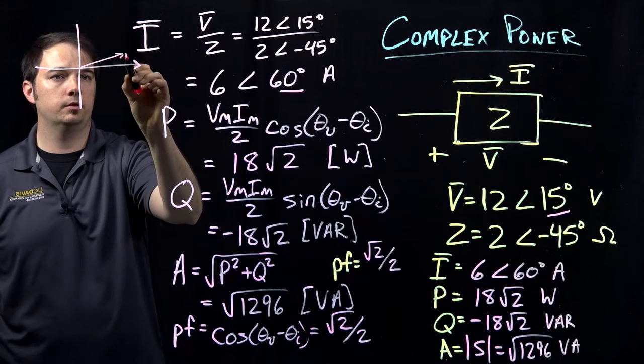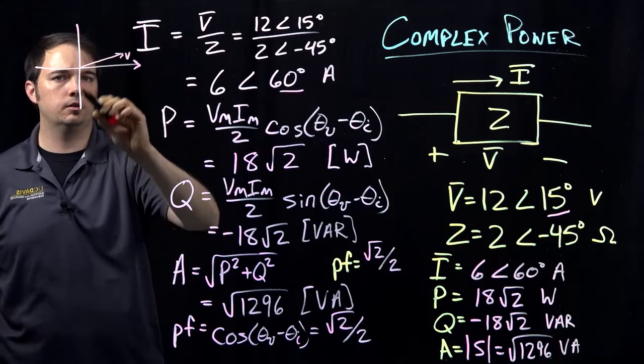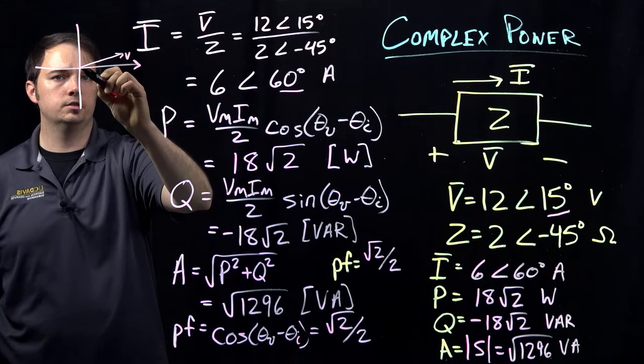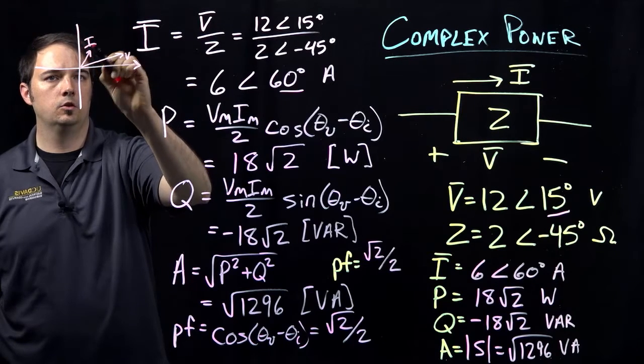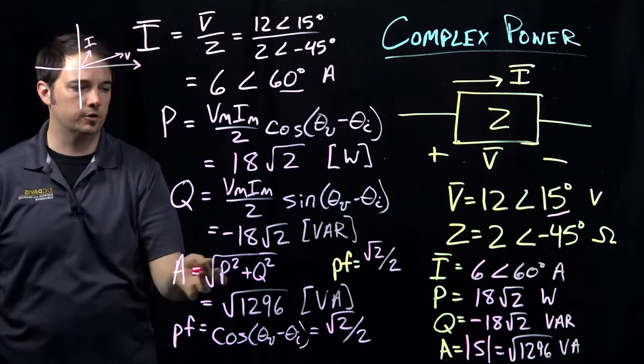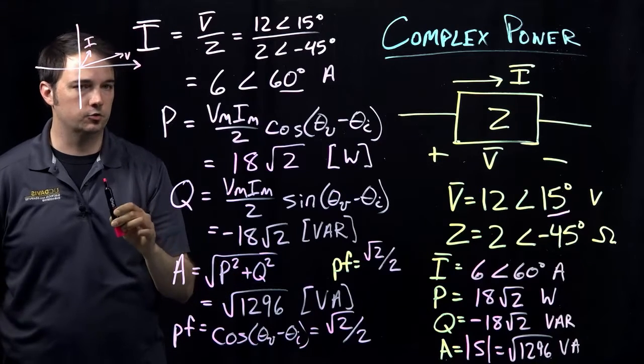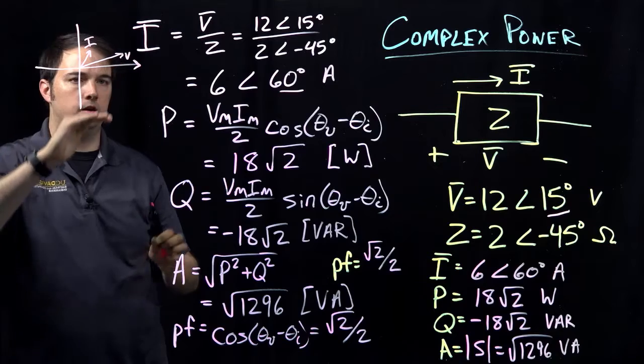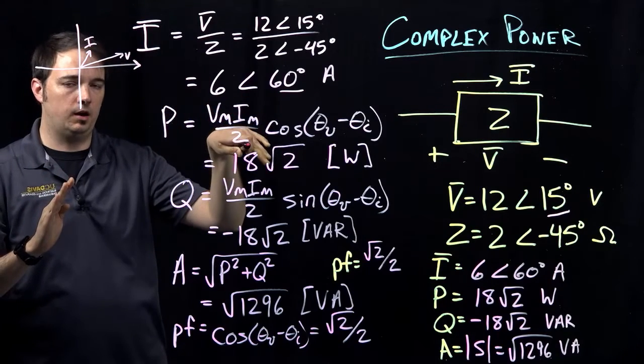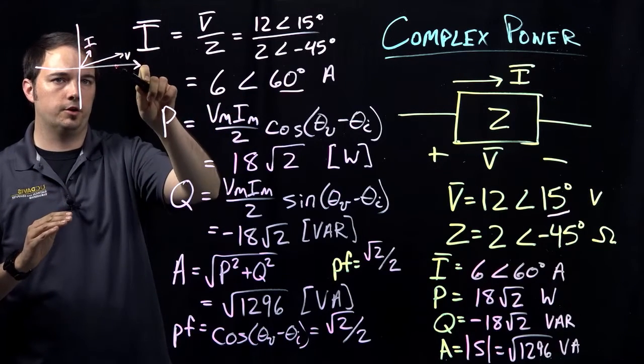If I know my voltage here is 12 at an angle of 15 degrees, I would maybe be, let's say here, that would indicate my voltage. My current is 6 at an angle of 60 degrees, so let's say maybe this is like this.